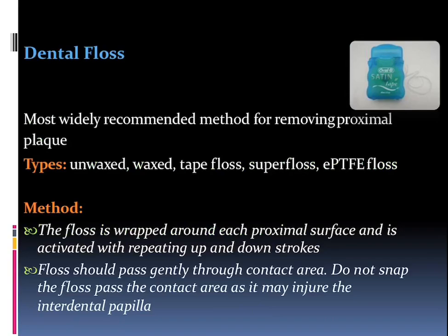The types of dental floss can be unwaxed, waxed, tape floss, super floss, or ePTFE floss — which is an expanded PTFE floss. The method: the floss is wrapped around each proximal surface and is activated with repeating up-and-down strokes. The normal floss is taken at a length of about 12 inches and is engaged around the index fingers of both hands.